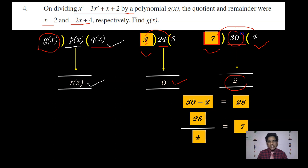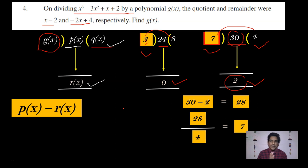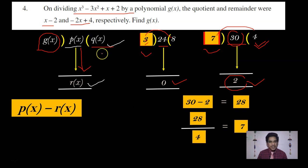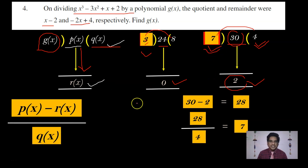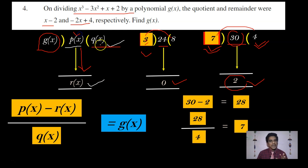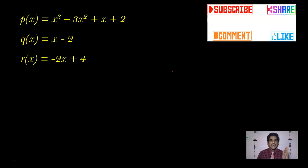We apply the same logic here. To find the divisor g(x), first subtract the remainder R(x) from p(x). The result p(x) - R(x) will be a multiple of the quotient. Then divide p(x) - R(x) by the quotient Q(x), and you will get the divisor g(x). So first let us find p(x) - R(x).